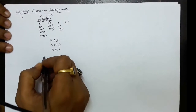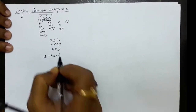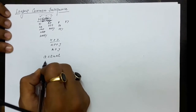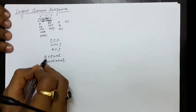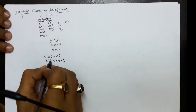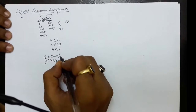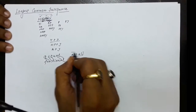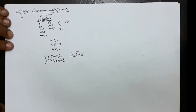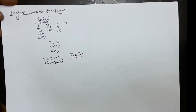Let us say the first string is 'actual' and the second string is 'fractional'. To find out the longest common subsequence: a has a match, c has a match, t has a match, a has a match, and l has a match. So 'actal' is the longest common subsequence. To find this out, I will employ a dynamic programming solution — a 2D dynamic programming solution — which will require a two-dimensional memoization table.